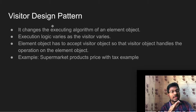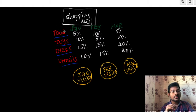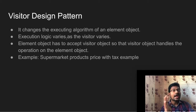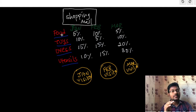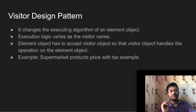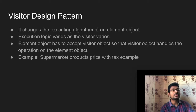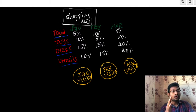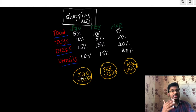It changes the execution algorithm of an element object. The execution logic varies as the visitor varies. If the January visitor visits food products, it determines the tax as 5%. If the February visitor visits the food product, it determines the tax percentage as 10%. The element object has to accept the visitor object so that the visitor object handles the operation on the element object. These four elements need to accept the visitor objects so that the visitor object can execute its algorithm on the elements.